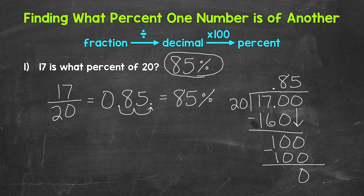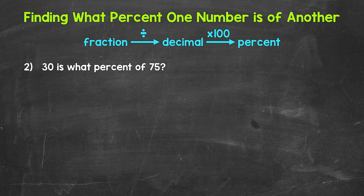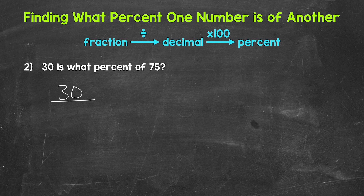Let's move on to number two. We have: 30 is what percent of 75? We're going to divide and then multiply. For 30 is what percent of 75, let's think of this as 30 out of 75. 30 is the part and 75 is the whole. So we can set this up as the fraction 30 over 75. And now we divide — 30 divided by 75.